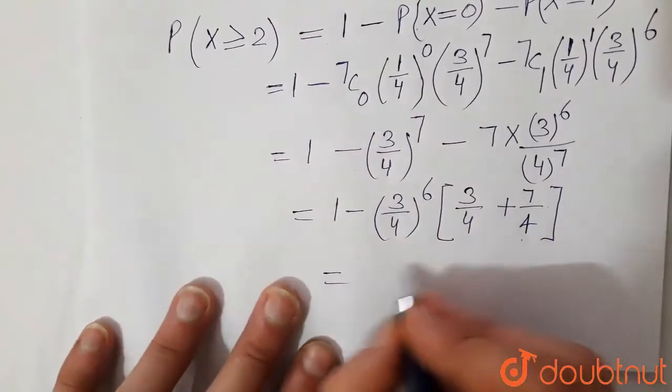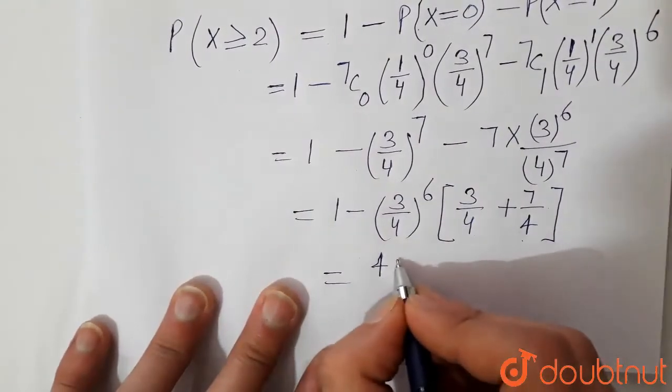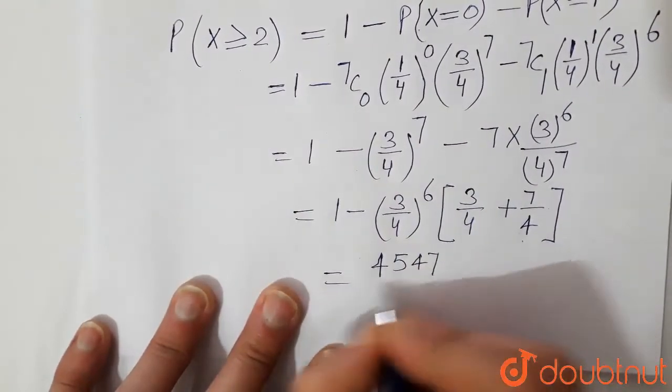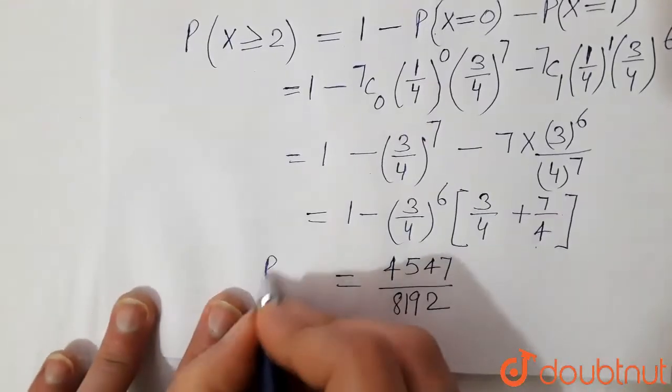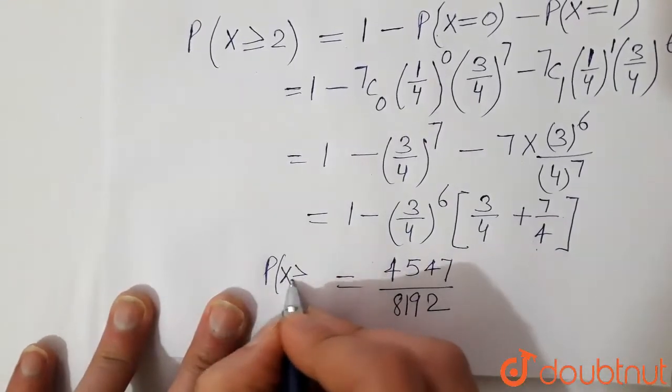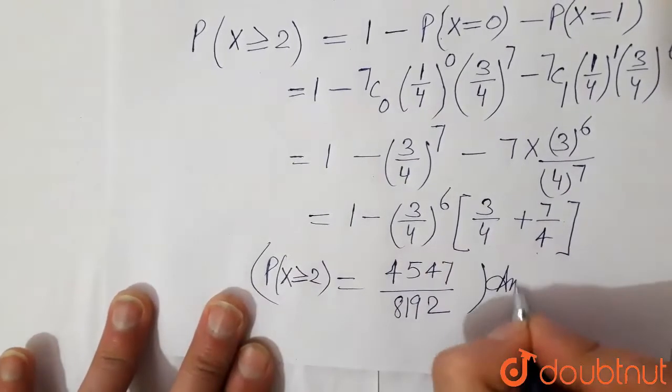So on solving this, we get final value is 4547 divided by 8192. So this is the probability of him hitting at least twice. This is the final answer. Thank you.